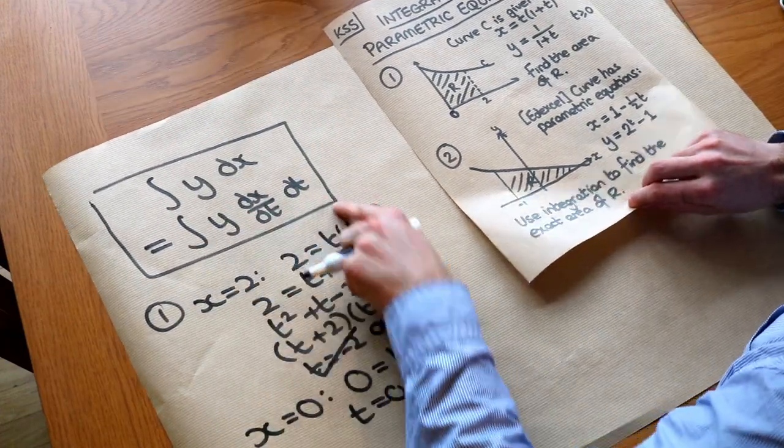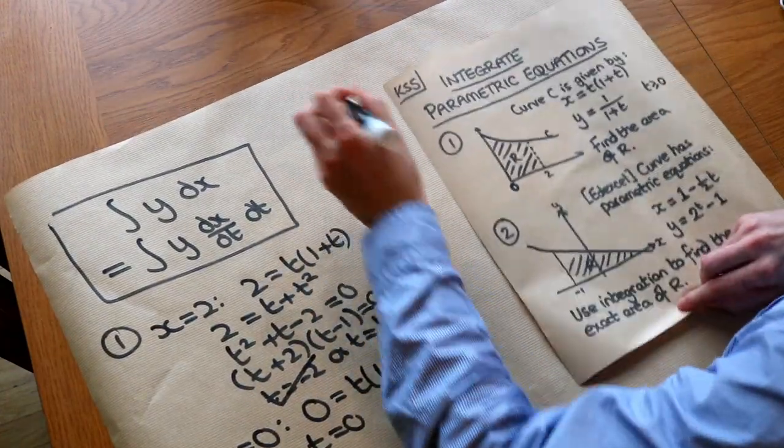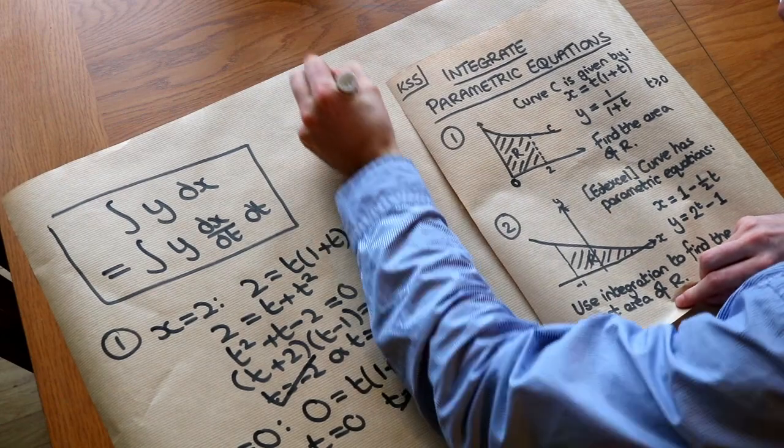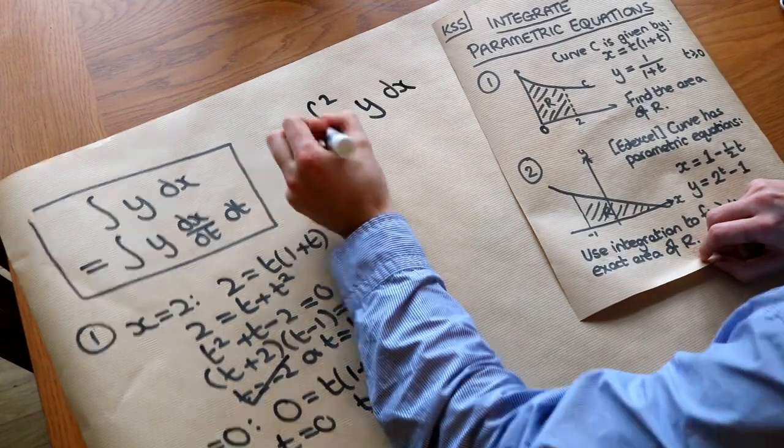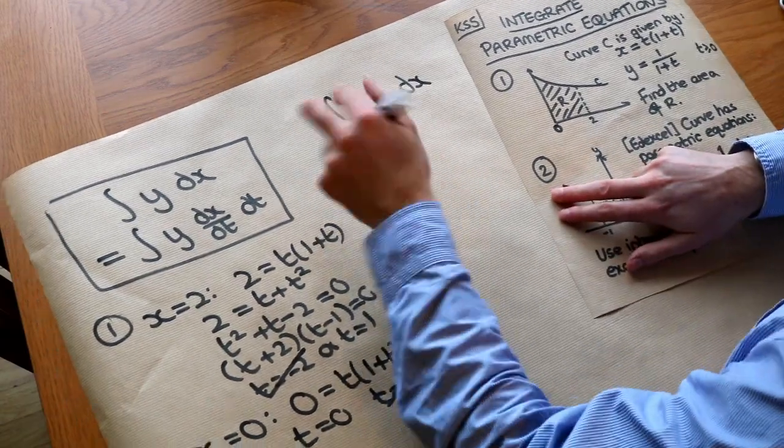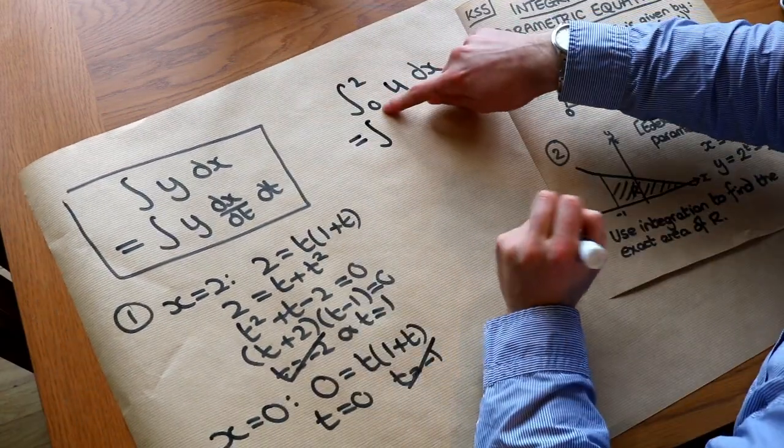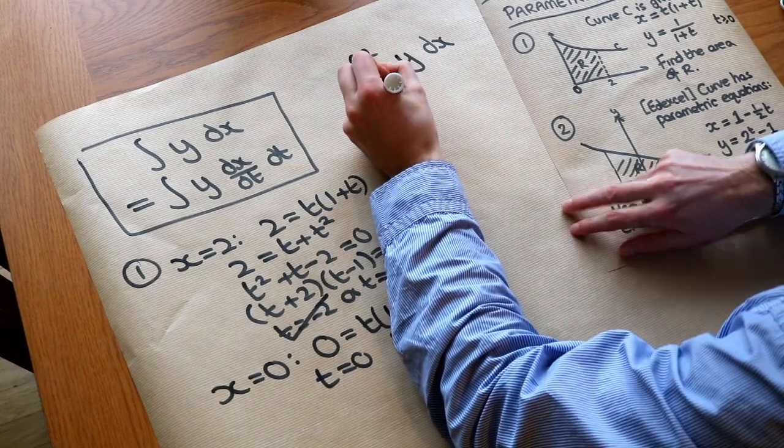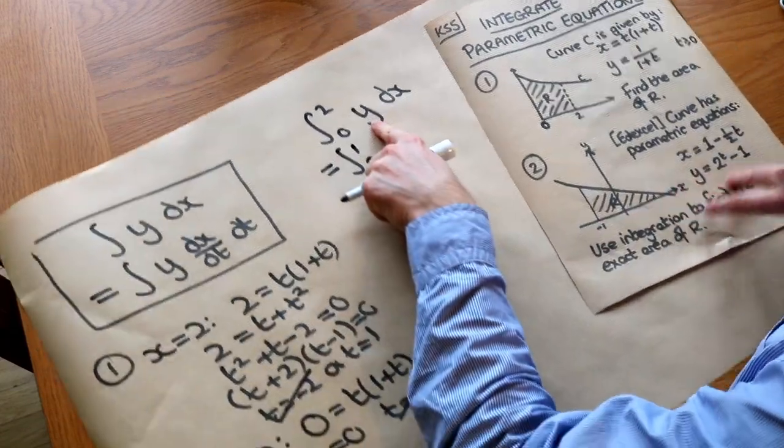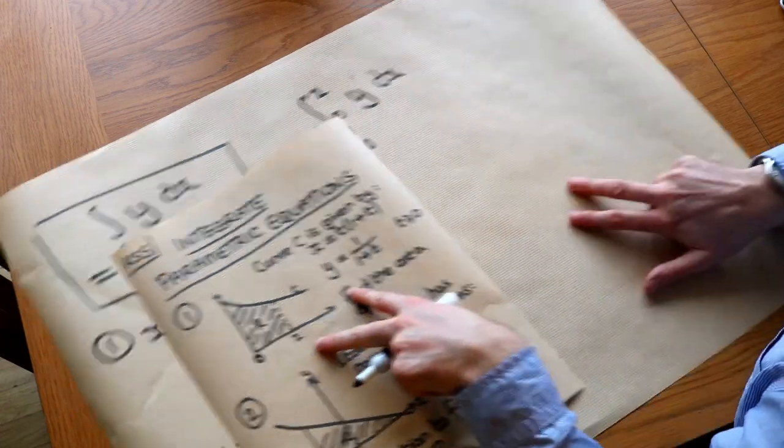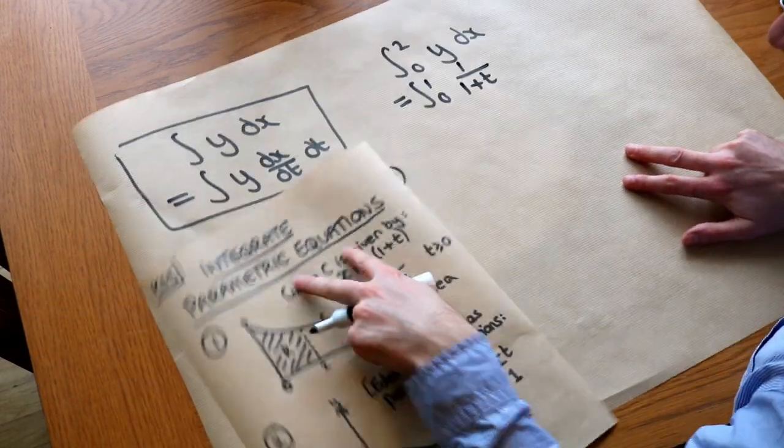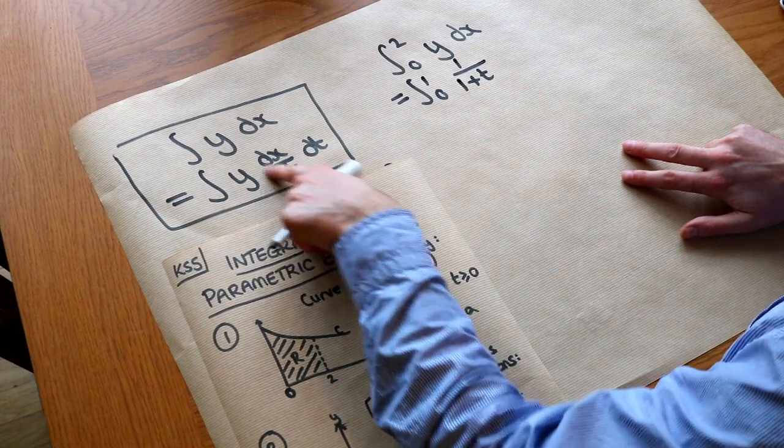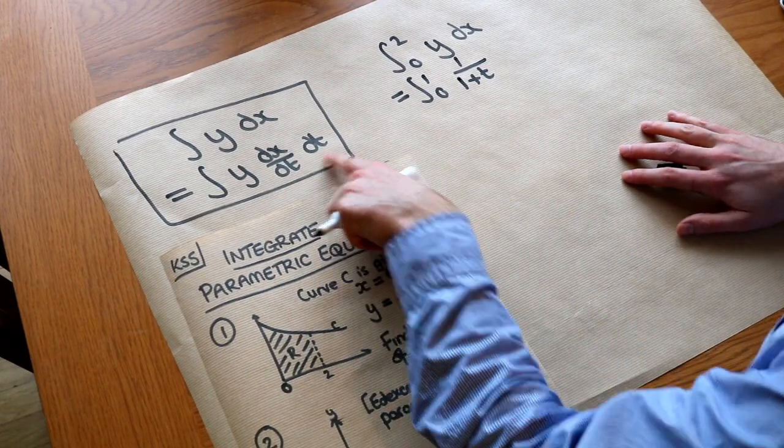So now let's apply this formula here. We want to integrate between 0 and 2, and we want to integrate Y with respect to X. But we've changed these bounds, so these X values of 2 and 0 became T values of 1 and 0. The Y we can use this parametric equation here, so the Y is 1 over (1 plus T), and the DX we could see we could replace with DX over DT times DT.